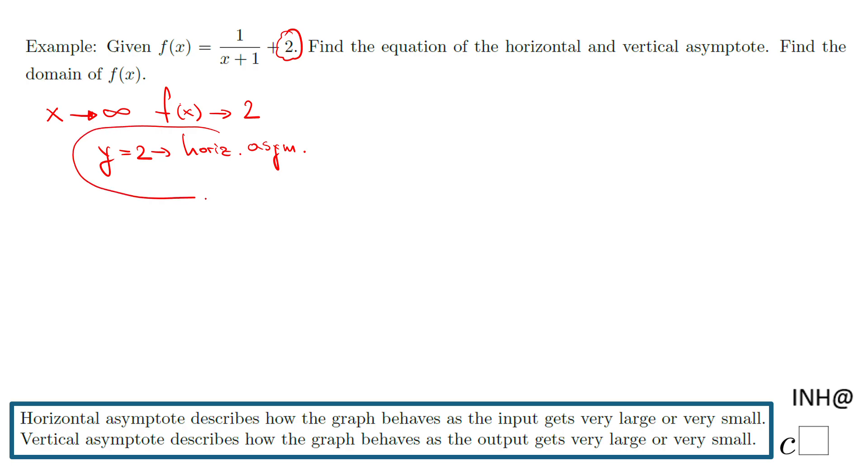What about vertical asymptote? You notice here I said vertical asymptote describes how the graph behaves as the output gets very large or very small. What I mean is we want to find out when y is getting larger, when f(x) is getting larger or small.